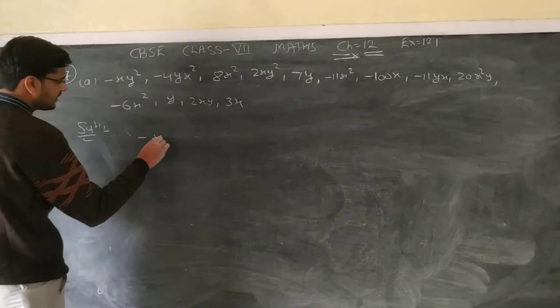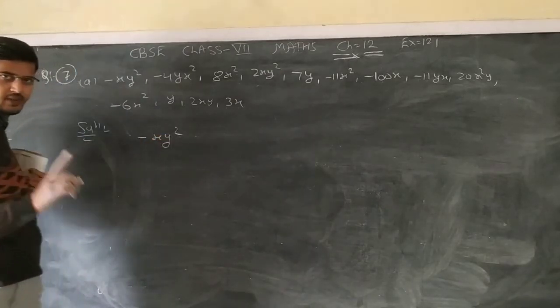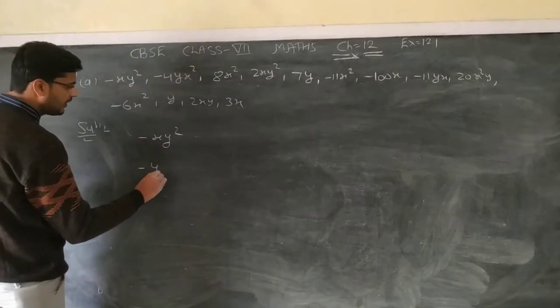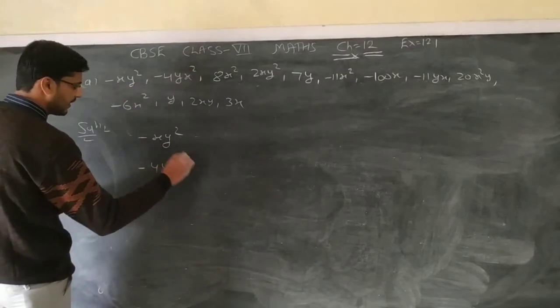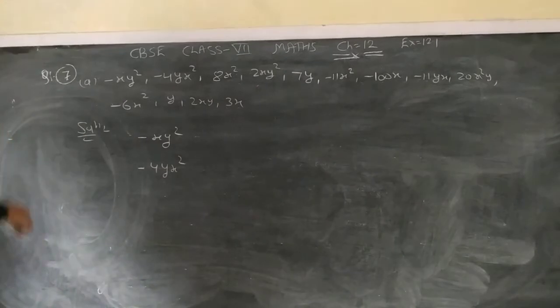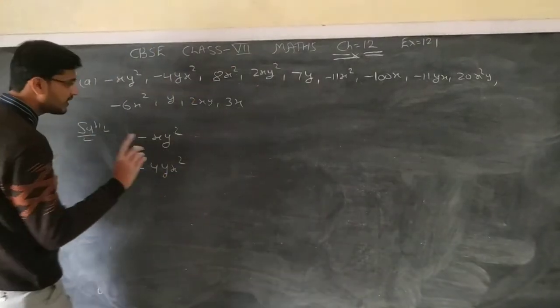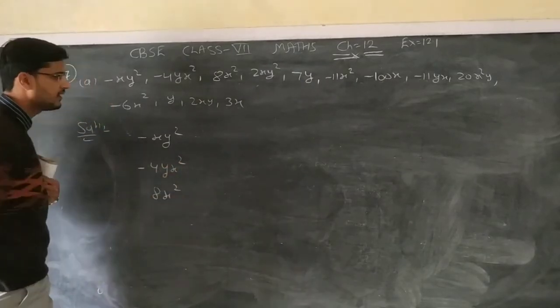First one is minus xy square. Now second one is minus 4yx square, so this is different term, so this is our next right term, minus 4yx square. Now next row also, 8x square, every different area, this is going to be our 8x square right here.